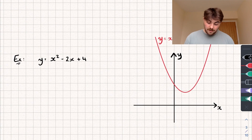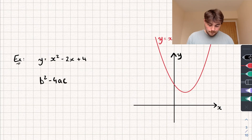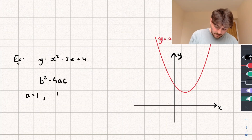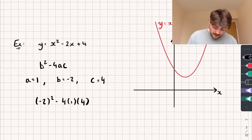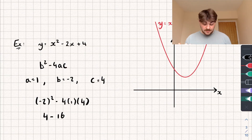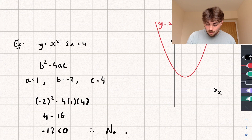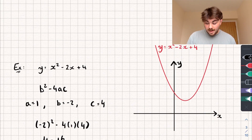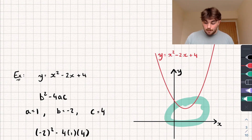Now let's look at this final example where we have y equals x squared minus 2x plus 4. Let's use the discriminant, b squared minus 4ac. So a is equal to 1, b is equal to negative 2, and c is equal to 4. Inputting them in: negative 2 squared minus 4 times a times c. Negative 2 squared is 4, minus 4 times 4, which is 16. When we work this out, we get negative 12, which is less than 0. Therefore we can say no real roots. What that means graphically is that our quadratic graph isn't going to touch the x-axis at all — in this case you can see it's above the x-axis.